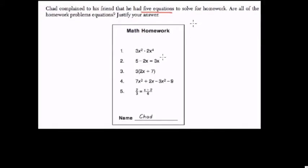Of the five choices here, there are only two equations. Choice 2 is an equation because it has the equal sign. It's relating 3x to 5 minus 2x.